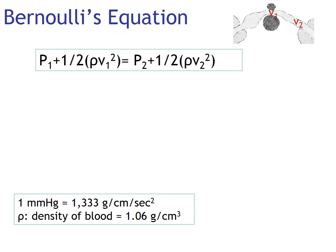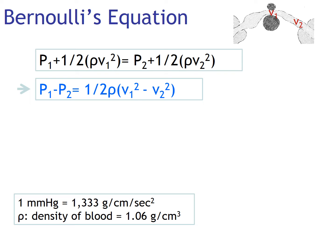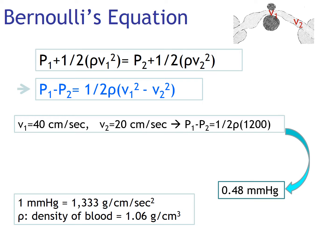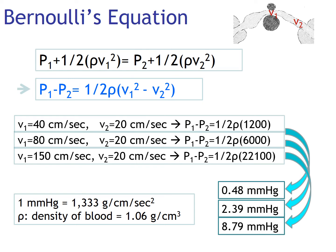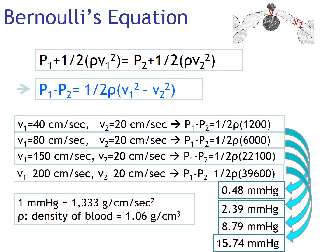We can rearrange the equation and calculate the pressure gradient if we know two velocities — one at the aorto-mesenteric portion and one at the hilar portion. If we put in normal values of 40 and 20 cm/sec, the theoretical pressure gradient will be 0.48 mmHg, consistent with the normal value of less than 1 mmHg. If they are 80 and 20, the gradient is 2.39; if 150 and 20, it is 8.79; and if 220 and 20, it is 15.74 mmHg.